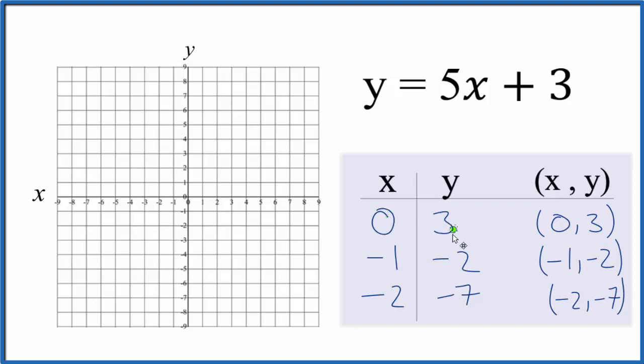So we go to 0, 3, x is 0, y is 3, that's our first point. Negative 1, that's right here, and negative 2 y, that's down. And we could stop there with two points but it's nice to have three in case you made any mistakes. So we have negative 2x and then negative 7 on the y. You can see they all line up.